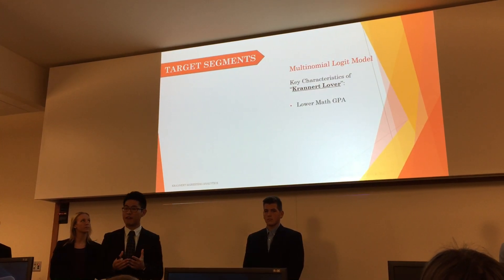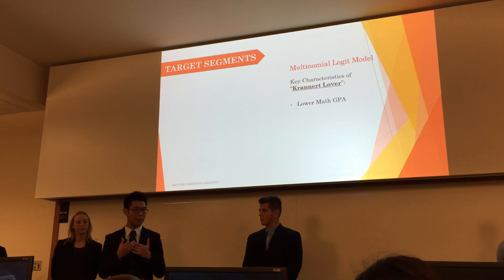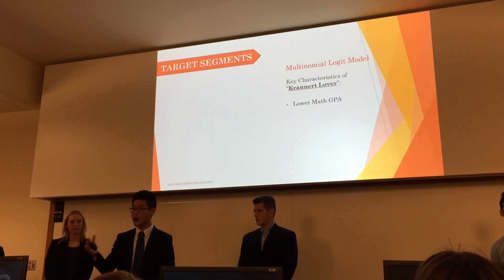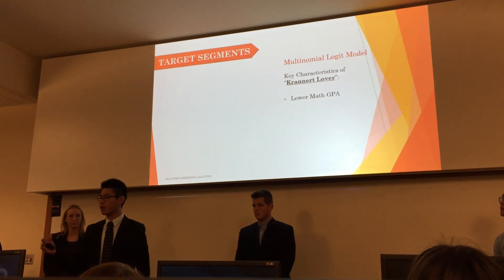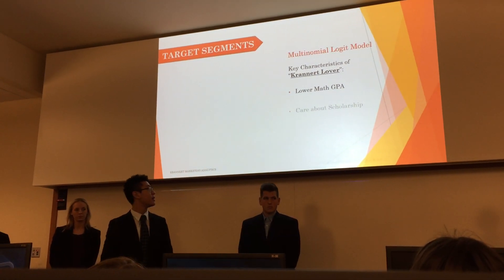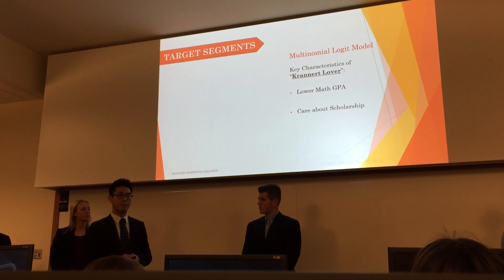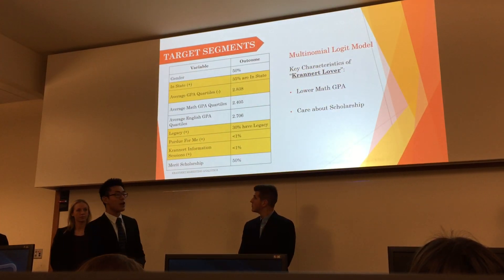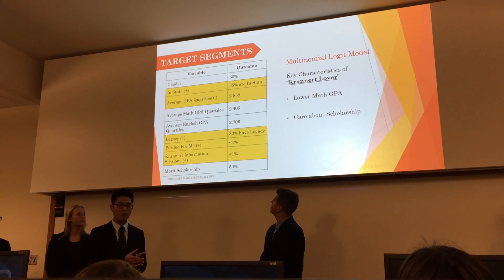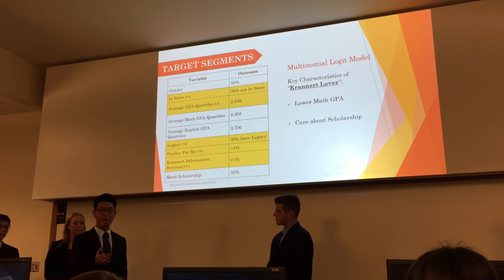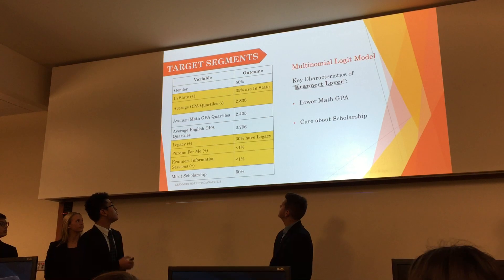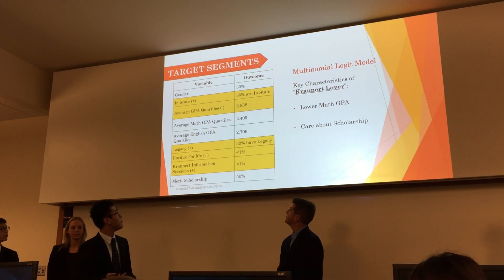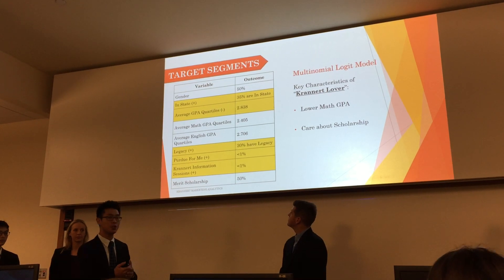First, they have lower math GPA. If you step back and think about it, that makes perfect sense because we're a business school — students who are very strong in math tend to go to engineering. Second, they do care about scholarships. As for demographics: 50% are male, 50% are female, 35% are in-state students, their average overall GPA quartile is 2.838, math is 2.405, and English is 2.706.